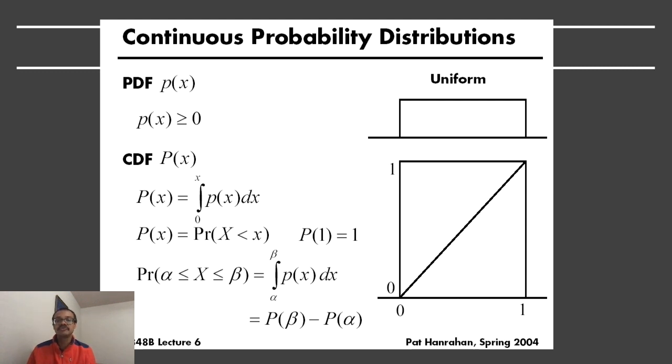The cumulative distribution function or CDF, which is denoted by capital P of x, is a function which considers the integral of the probability distribution function up to some value. It can also be considered the probability that the random variable is less than the x value you are thinking about. For example, if you consider the cumulative distribution function at 1, we are considering the probability that this random variable will be less than 1, which if its range is from 0 to 1, that is equal to 1.